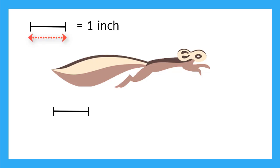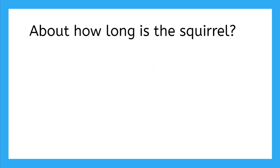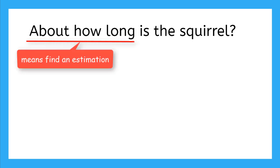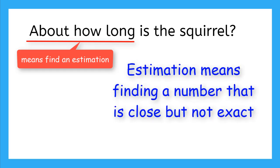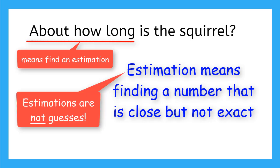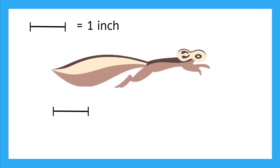Now, if this line is 1 inch long, about how long is the squirrel? Since the question asks about how long, we know that we are finding an estimation. An estimation is a number that is close to the actual number, but probably not exactly the same, and that is okay. We put thought and calculations into estimations, so they are not guesses.